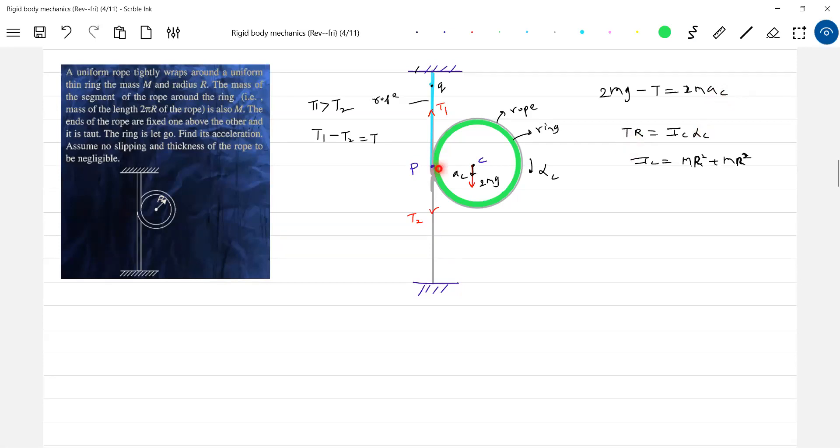I need one more equation. I'll take care of point P. Acceleration of point P along y axis should be equal to... Acceleration of Q should be 0. Then they lie on the string. So what is the acceleration of point P, PY? This should be equal to AC minus R alpha C.